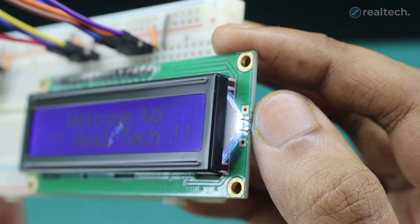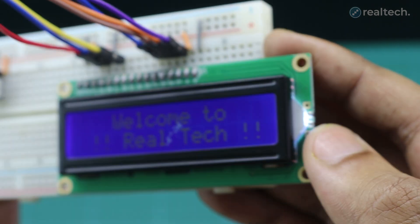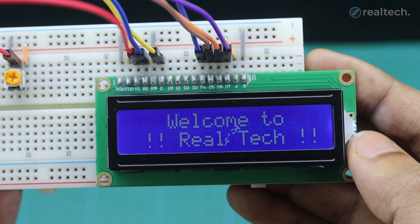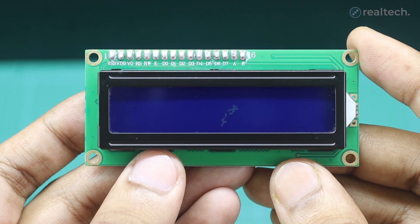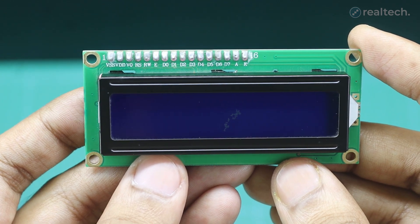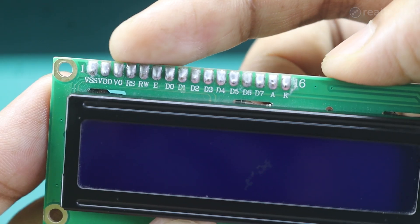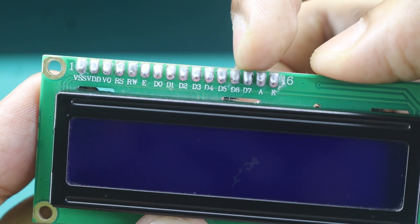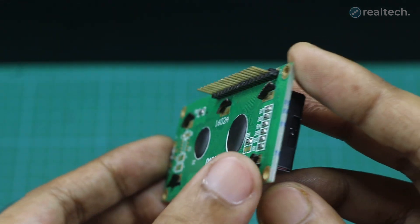This LCD module is available in different colors, but I have these blue displays with white characters. The display also features an LED backlight for clear vision that you can enable or disable. The module has a total of 16 pins and each has a specific function — let me quickly walk you through them with this diagram.